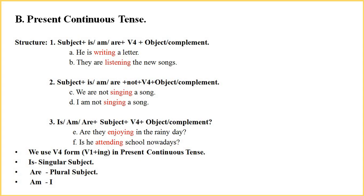For a negative sentence, the structure is: subject plus is/am/are plus not plus fourth form of the verb plus object or complement. For an interrogative sentence, the structure is: is/am/are plus subject plus fourth form of the verb plus object or complement with a question mark. Examples for interrogative sentences are: 'Are they enjoying in the rainy day?' and 'Is he attending school nowadays?'